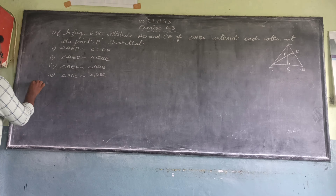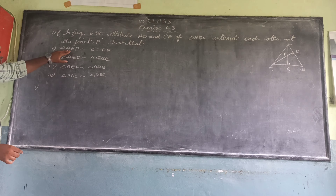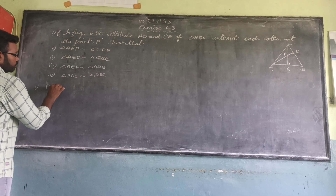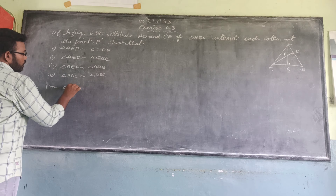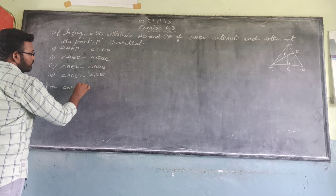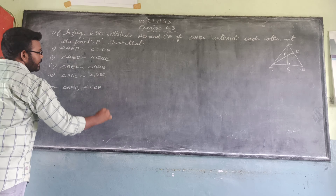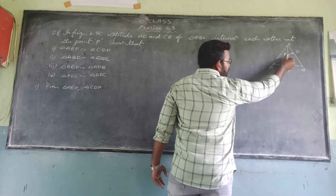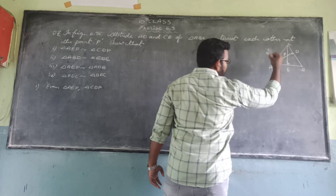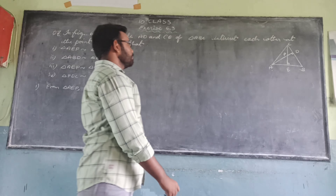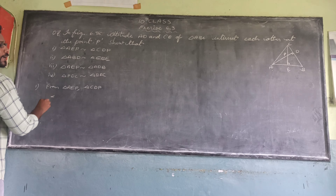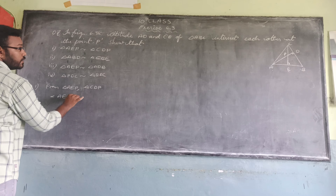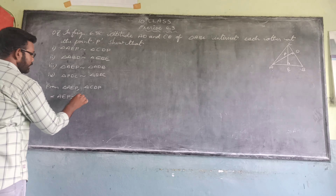ABC is a triangle in which AD and CE are the altitudes, intersecting at point P. Altitude means they make 90-degree angles with the opposite side. For the first part, we have to prove triangle AEB is similar to triangle CDP.